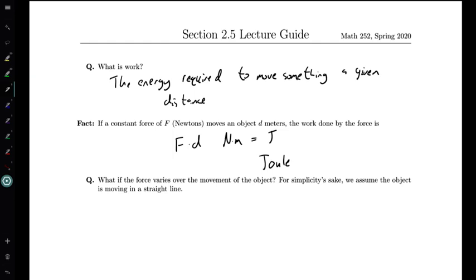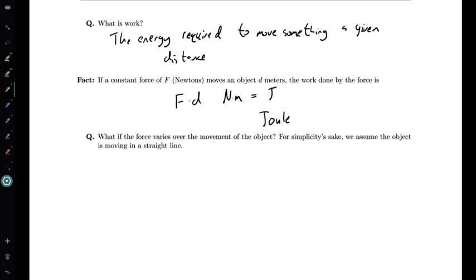Let's now ask the question: what if the force varies over the movement of the object? For simplicity's sake, we're going to assume the object is moving in a straight line. Certainly this is a reasonable sort of situation—force isn't always going to be constant.